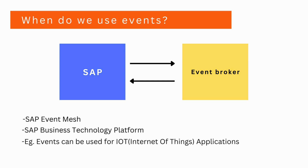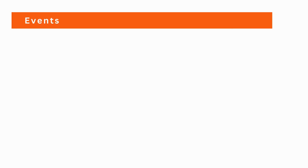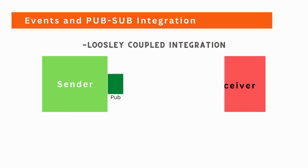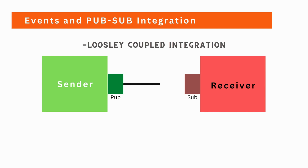Events are mainly used for Internet of Things application integration. To handle events, it is preferable to implement loosely coupled integration. When you want to implement loosely coupled integration, it is always preferable to use the PubSub model, which stands for publish and subscribe model.